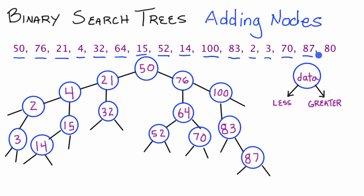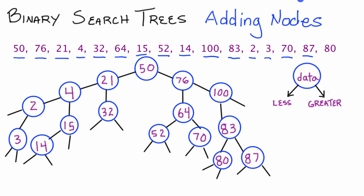Now we add our final node, which is 80. 80 is greater than 50, so we go right. 80 is greater than 76, so we go right again. 80 is less than 100, we go left. 80 is less than 83, so we go left. Finally, we add node 80 here attached to 83's left pointer. So here is node 80.